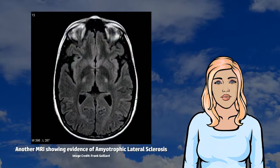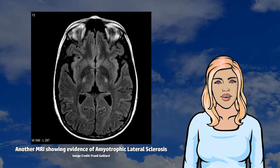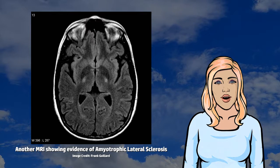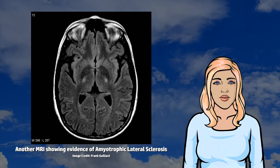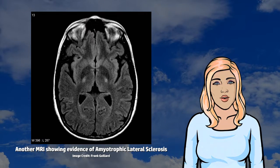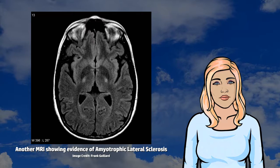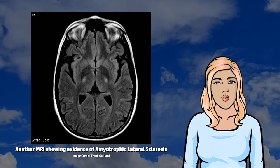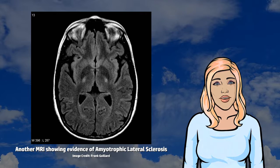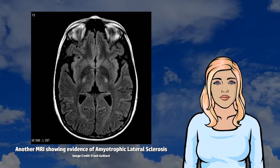The cause is not known in 90% to 95% of cases. About 5 to 10% of cases are inherited from a person's parents, and about half of these genetic cases are due to one of two specific genes.